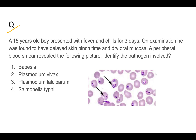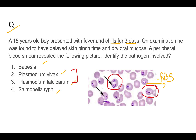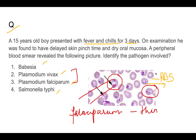Question two: a 15-year-old boy presented with fever and chills for three days, delayed skin pinch time, and dry oral mucosa. A peripheral blood smear showed RBCs with parasites. Options: Babesia, Plasmodium vivax, falciparum, and Salmonella typhi. The key confusion is vivax versus falciparum. Multiple and double ring forms in a single RBC are characteristic of falciparum, while vivax has a single ring.